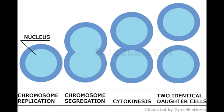Step 4: Splitting of Cells. Inward growth of the cell membrane is associated with development of a new cell wall. The final binary fission step is splitting of the parental cell into two daughter cells, each having a nuclear material chromosome of its own.